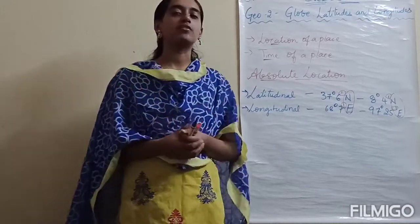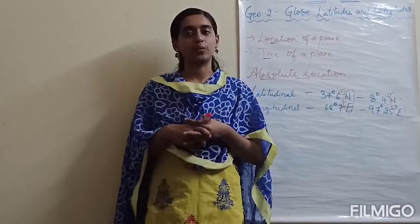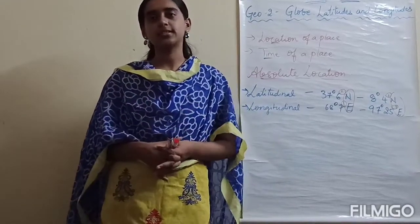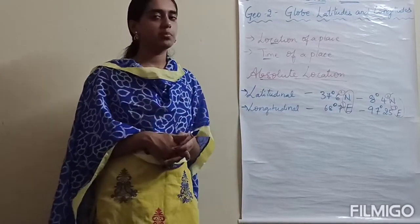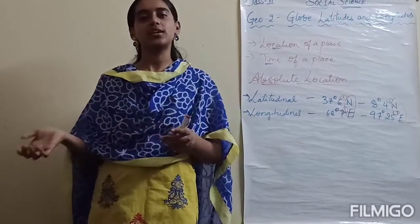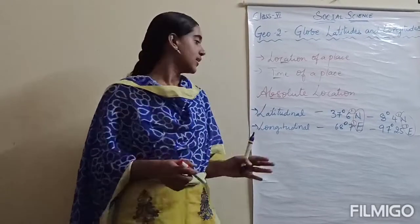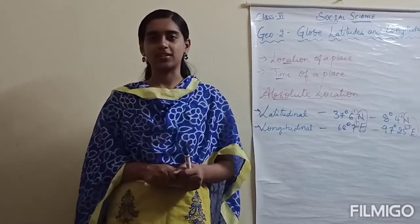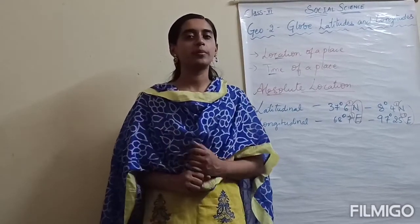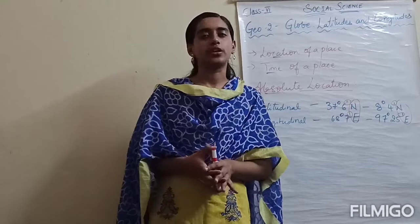Overall today we have learnt about the globe, the different types of globe, and how it is useful. We looked at the different reference points and the degrees of tilt relative to the orbital plane. We also learned how to describe a particular location — sometimes using landmarks or directions as relative location, and sometimes using latitudinal and longitudinal coordinates as absolute location. We will meet you in the next video. Goodbye, take care!